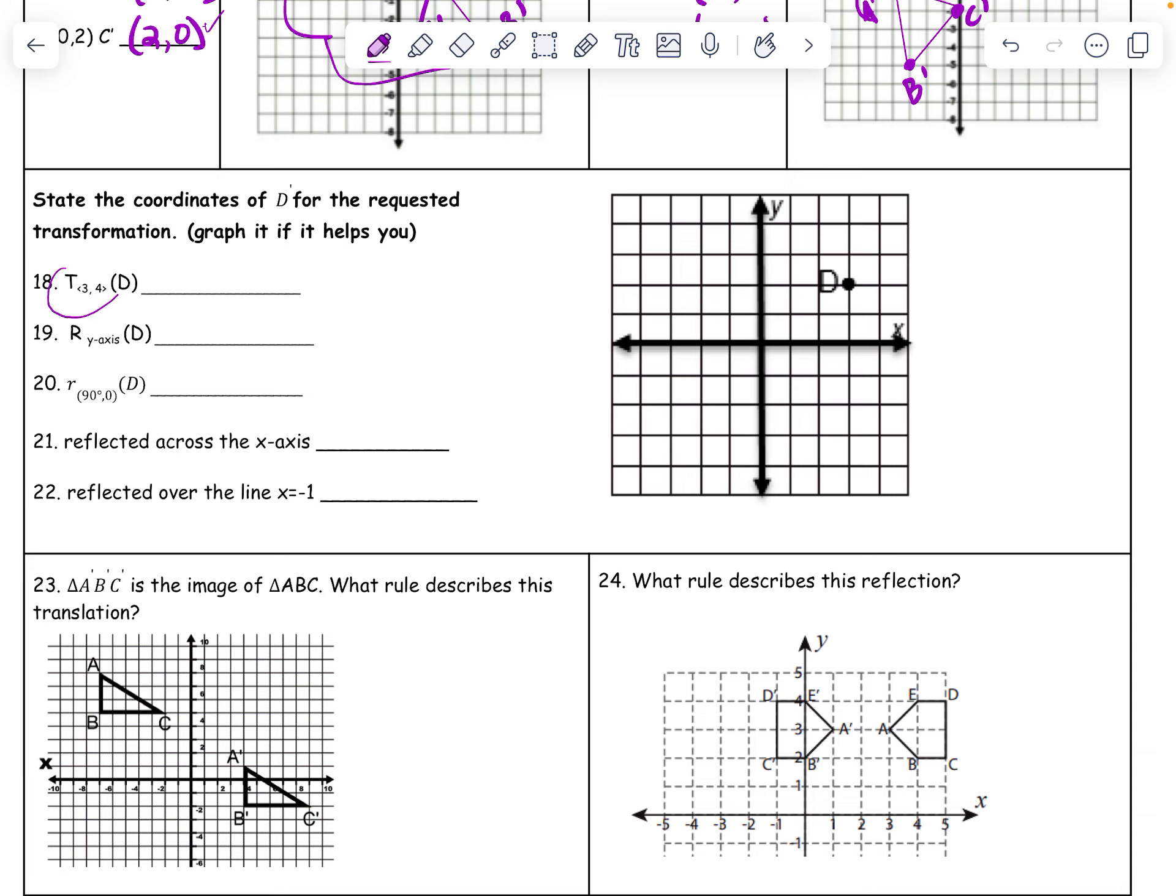State the coordinates of D for the requested transformation. So here it wants you to put D prime. Not P prime, thank you. D prime. All right. I need to go plus 3, plus 4. So let's see. D is at 3, 2. So D prime is going to be 3, 2.